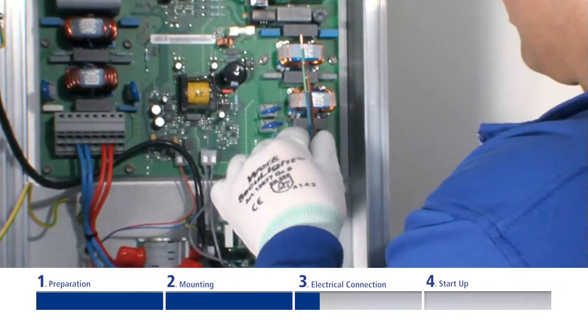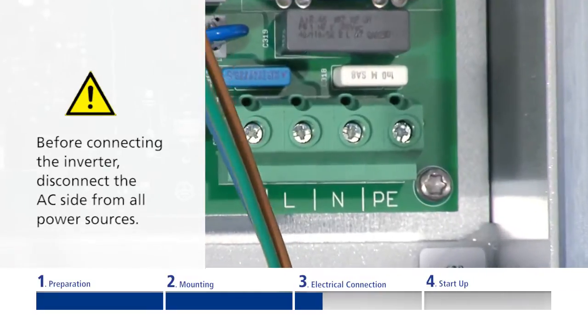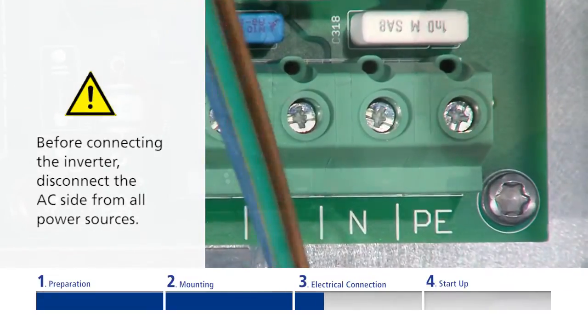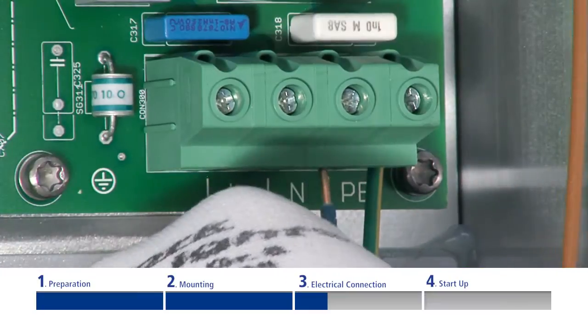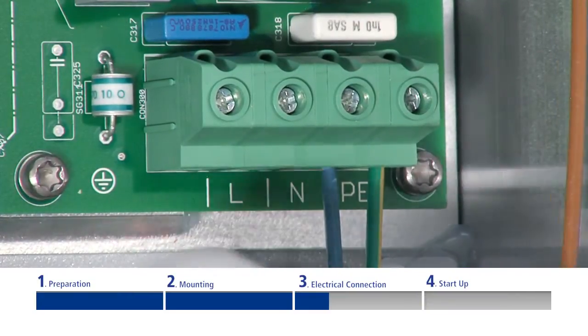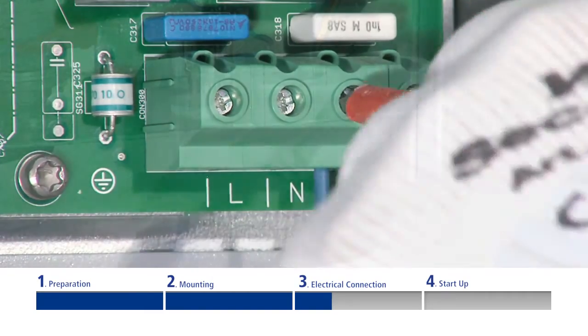After that, the AC inverter lead is connected. Strip the lead of its insulation and guide it through the cable fitting. Connect the leads according to the labeling on the PCB terminal. Check that the leads are connected properly and firmly. Then tighten the cable seal of the cable fitting.